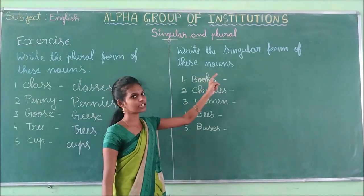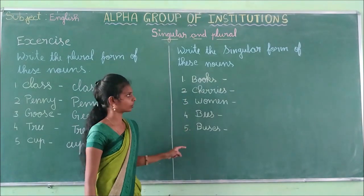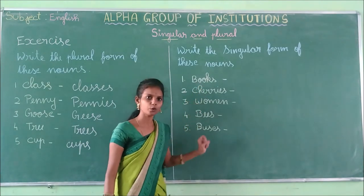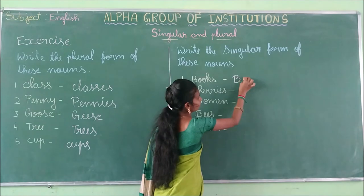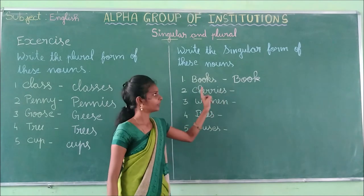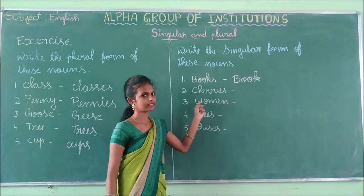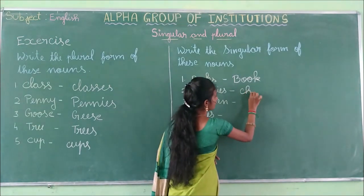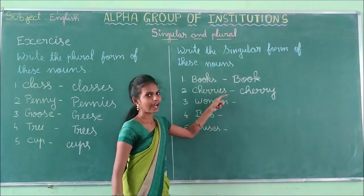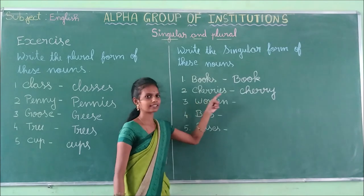Now write the singular form of these nouns. Books — the singular form is book, B-O-O-K. Cherries — the singular form is cherry, C-H-E-R-R-Y. We remove IES and add Y. Cherries→cherry.